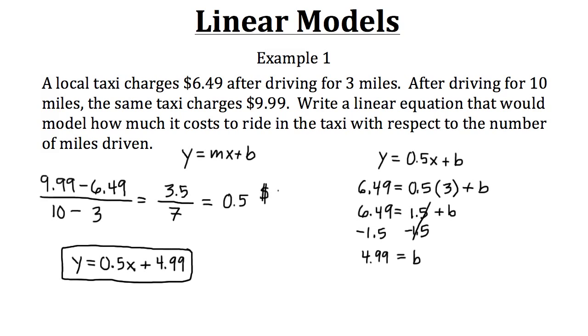So our slope of 0.5 represents the amount of dollars it costs per mile that we ride in the taxi. For our case since it's 0.5 dollars it would cost us 50 cents for every mile that we ride in the taxi.